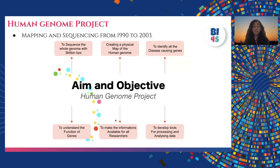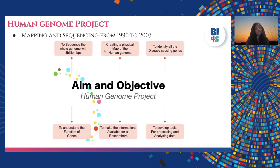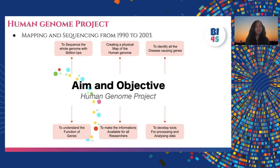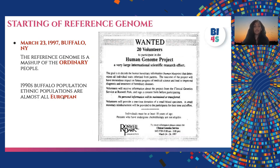To map and sequence the whole 3.3 billion base pairs of the human genome, the project started in 1990 under a project called the Human Genome Project, which was finished in 2003. The aims and objectives of the Human Genome Project were to sequence the whole genome of 3 billion base pairs, create a physical map of the human genome — which means which gene is at which chromosome — to identify all disease-causing genes, understand gene function, make information available to researchers, and develop tools for processing and analyzing the data.